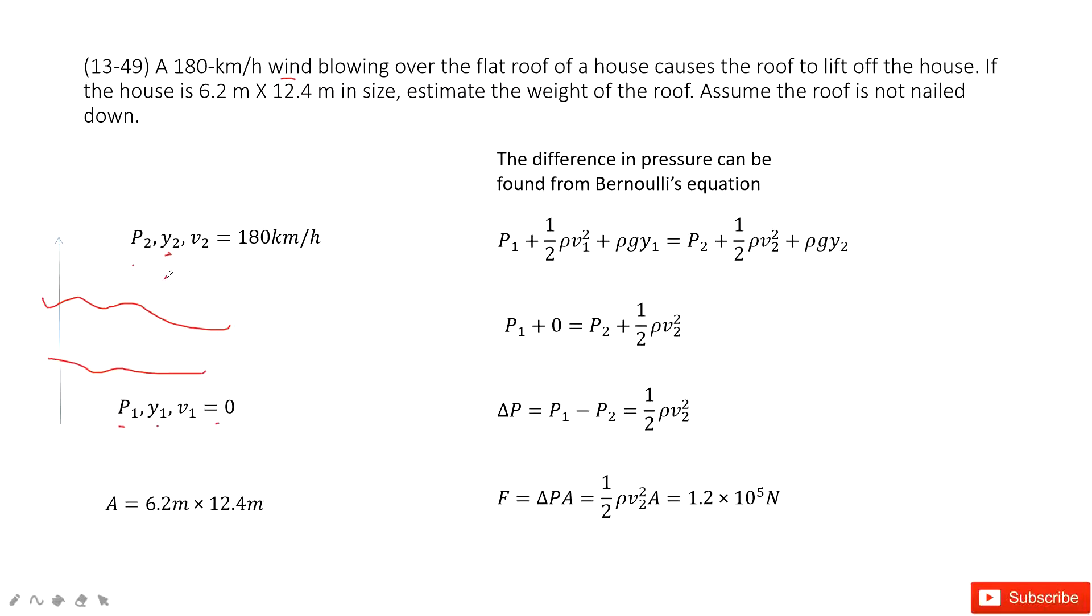Now we consider there is a pressure acting on this roof. So where does the pressure come from? It comes from this difference between p2 and p1. And this pressure brings the force acting on this roof.